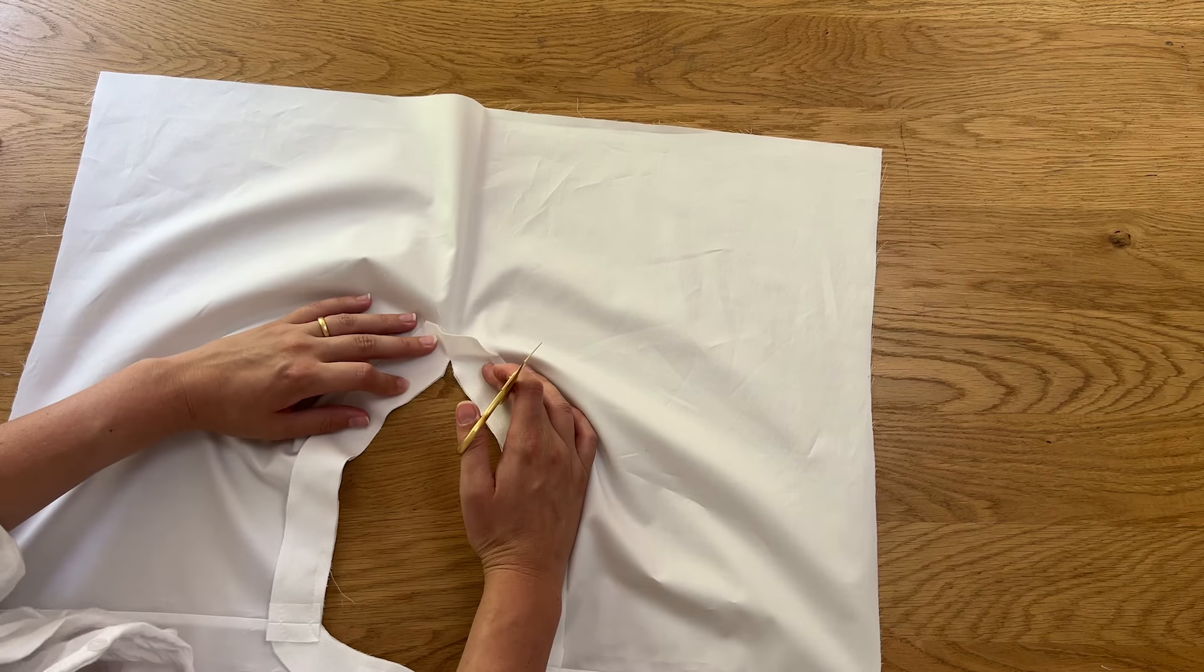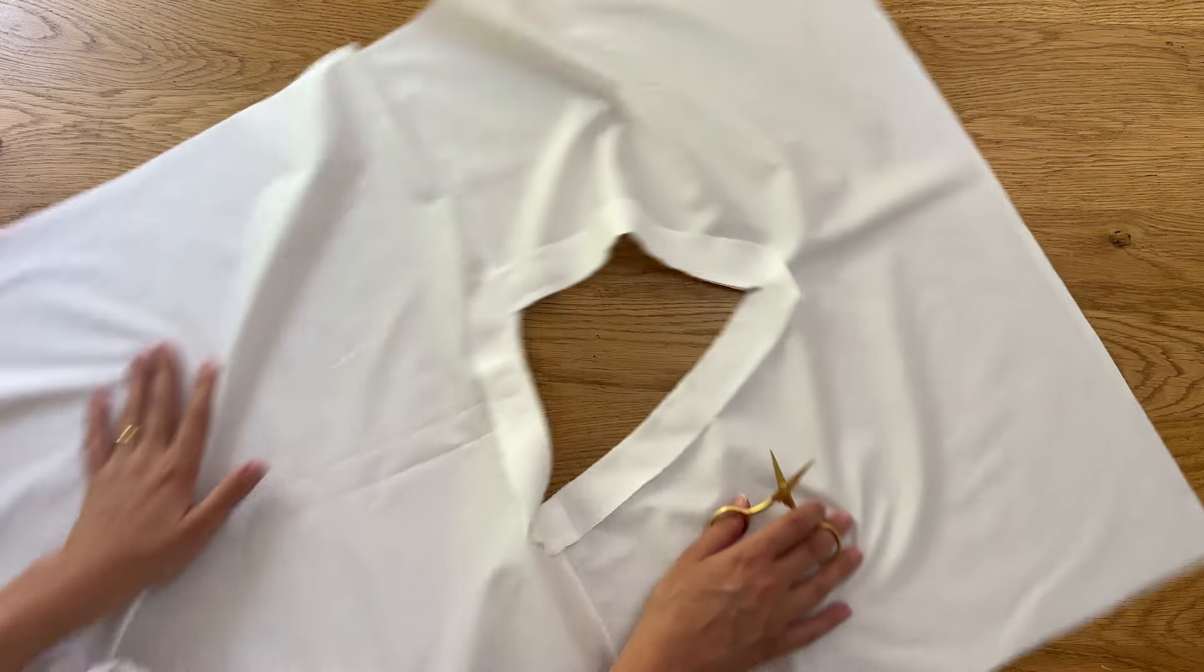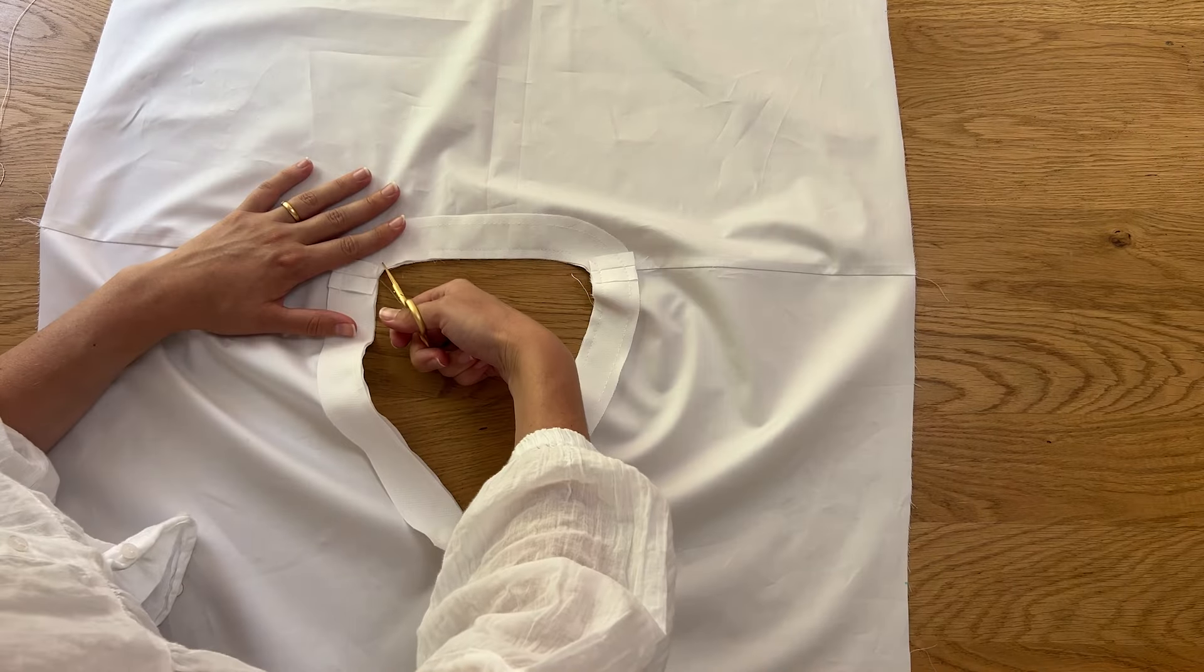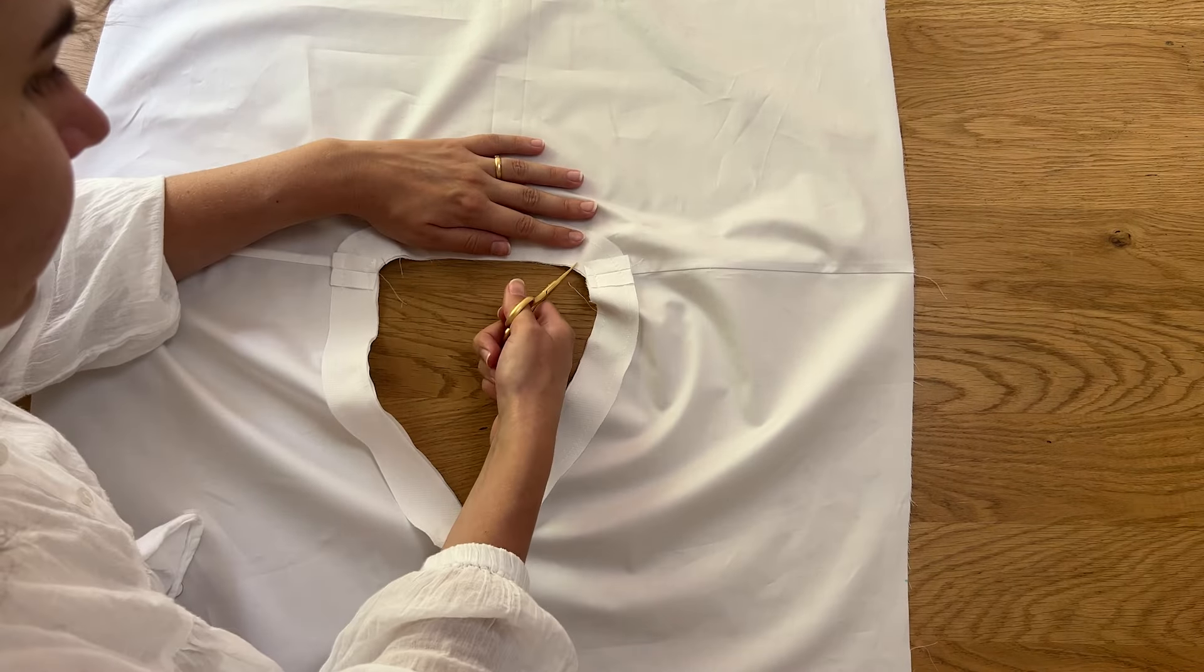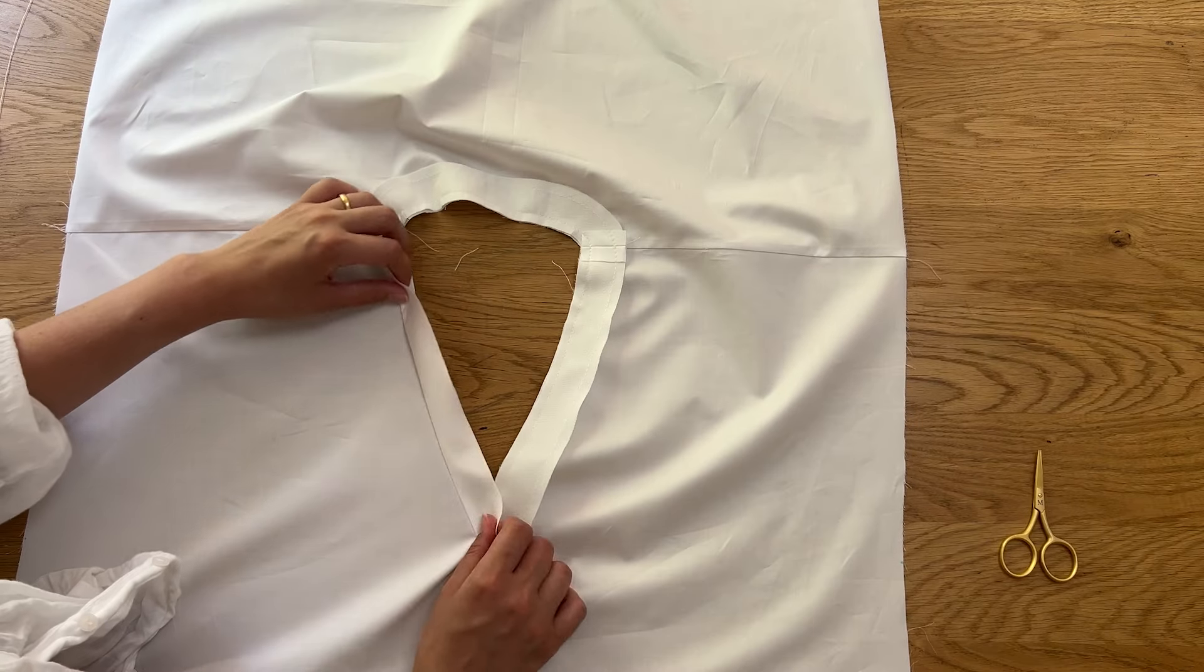After the facing has been sewn on, carefully clip into the v-neck up to the stitch line. Make sure not to cut through the stitches. Also clip into the curve on the back neck. This will help the facing to sit nice and flat when folded inwards.